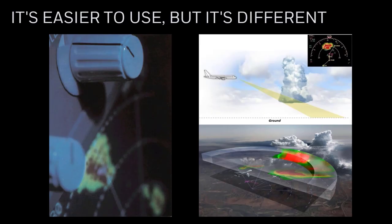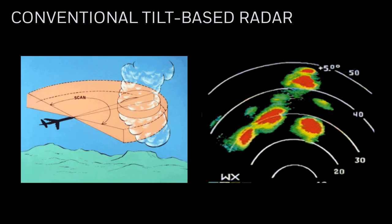The RDR 4000 is much easier to use, but it's different. It automates many of the tasks required by conventional radar, but does them in a different way. A good starting point is a quick review of conventional tilt-based radar operation, and then we'll see how the RDR 4000 makes life easier. With a conventional tilt-based radar, the system sweeps an area ahead of the aircraft based on the selected tilt angle, with a one-to-one correspondence between the antenna sweep and what is shown on the display.